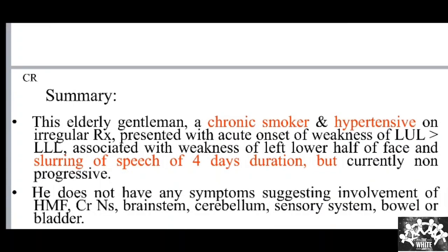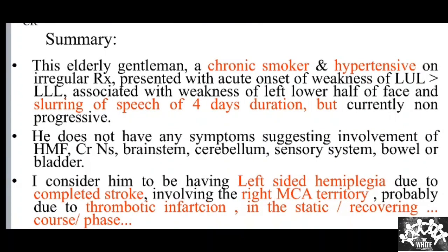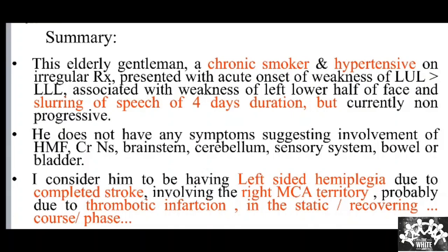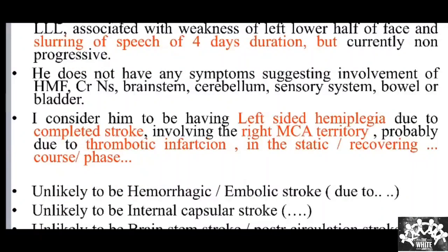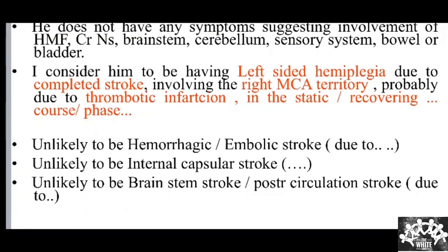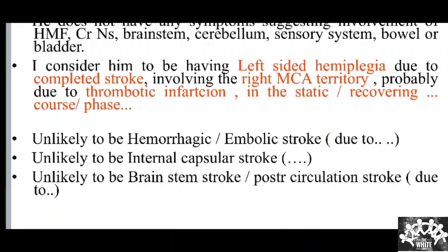To summarize this case: this elderly gentleman, a chronic smoker on irregular hypertension treatment, presented with acute onset weakness of the left upper limb more than the left lower limb, associated with weakness of the left lower half of the face and slurring of speech of four days' duration — currently non-progressive. He does not have any symptoms suggestive of involvement of higher mental functions, cranial nerves, cerebellum, or bowel and bladder. He has a left-sided hemiplegia or hemiparesis — completed stroke, meaning the weakness has reached its maximum and has not progressed for more than 24 hours.